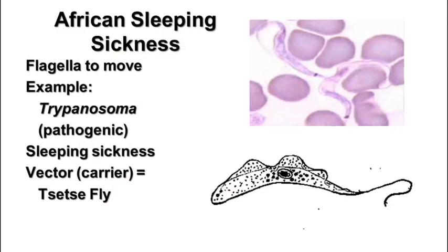Another disease is African sleeping sickness. Trypanosoma has a flagella so it can move around. It can cause fever and chills and eventually coma and death. It's found in parts of Africa, carried by the tsetse fly and transmitted by its bite, similar to how malaria is transmitted by the mosquito. This concludes notes on Protista.